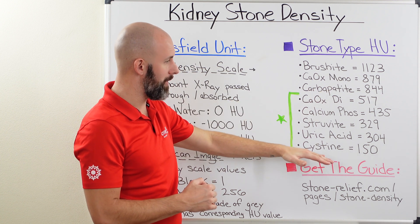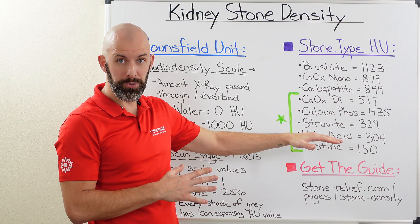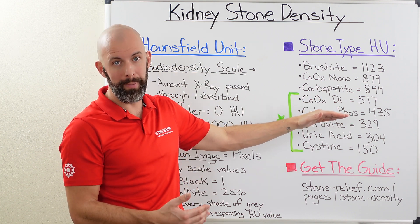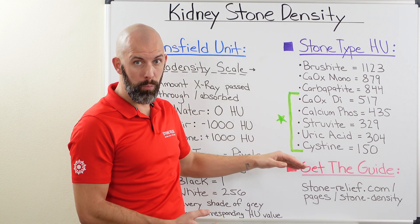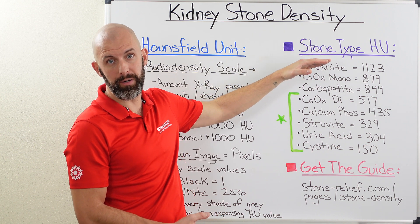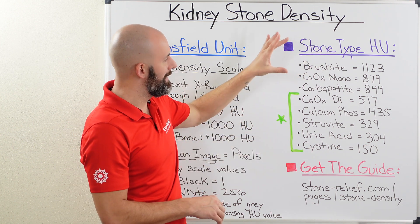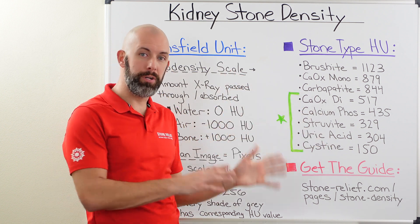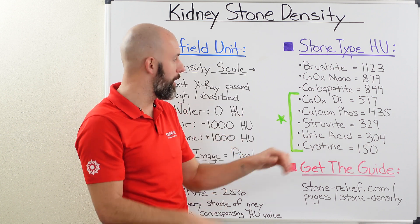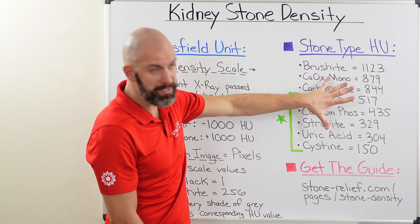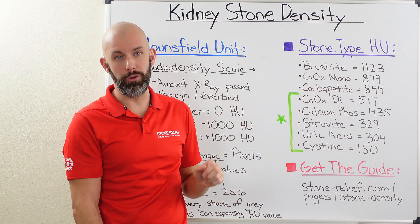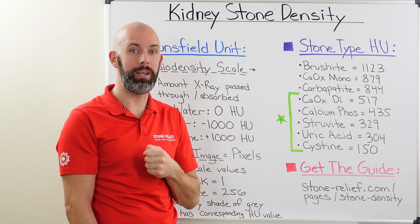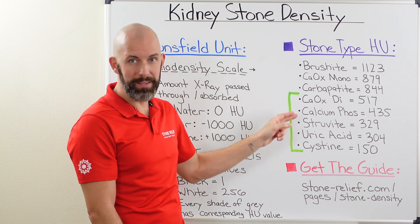To recap: stones with densities less than 500 HU are great targets for natural or medical expulsive therapy because they're susceptible to dissolution and will break apart upon passing in most instances. For more dense stones with a value of 850 HU or higher, extracorporeal shockwave lithotripsy is not going to be an option. And for those lesser density kidney stones below 675 HU, PCNL — cutting you open and pulling the stone out — is not a good fit either. Your doctor and urologist should know this information, but we need to take charge of our health to ensure we're getting the appropriate treatment.